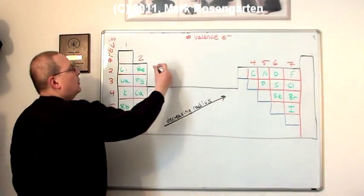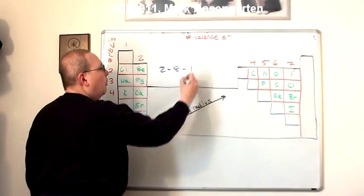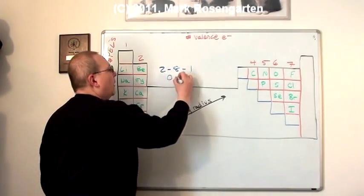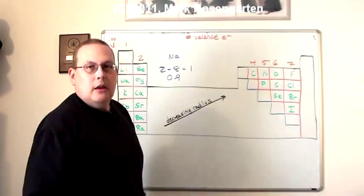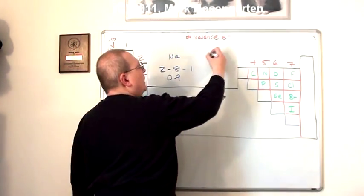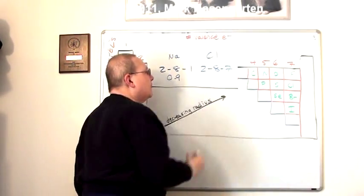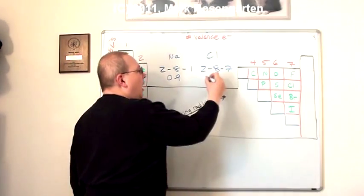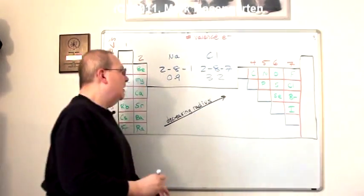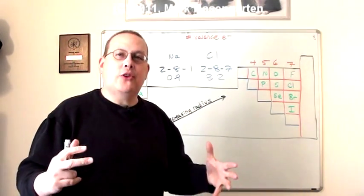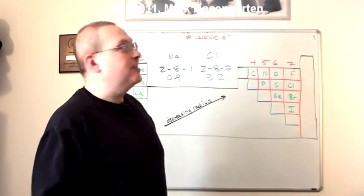For example, sodium has a configuration of 2-8-1, and it has a pathetic electronegativity of 0.9. This is sodium. When it comes into contact with chlorine, chlorine has a configuration of 2-8-7. It has an electronegativity of 3.2. Now, let's take a look at the difference here, and try to figure out why chlorine has such a strong attraction to electrons, and sodium doesn't.